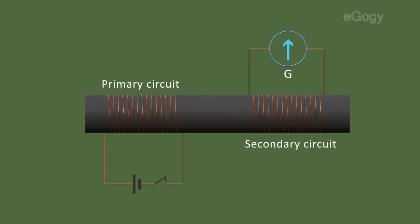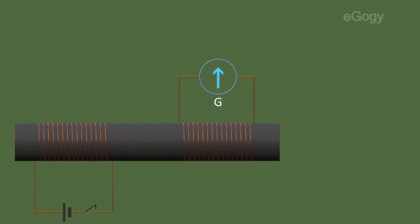When we switch on, the galvanometer deflects to one side and returns back to its main position. When we switch off, the galvanometer deflects to the opposite direction and comes back to the original position.